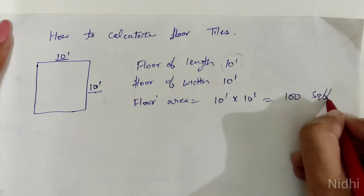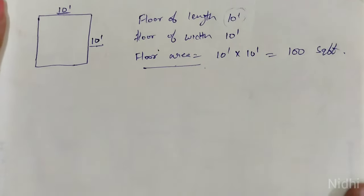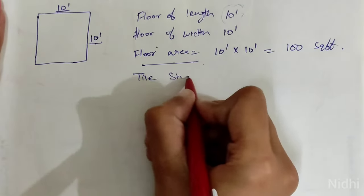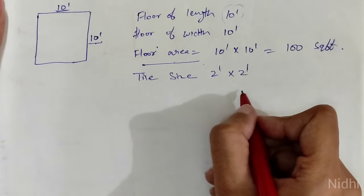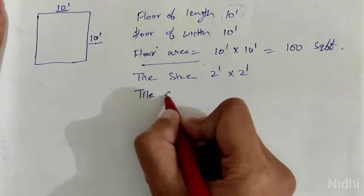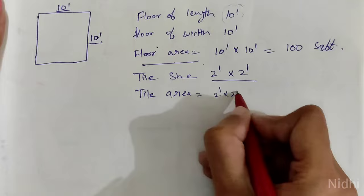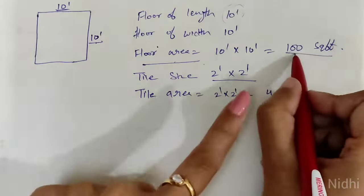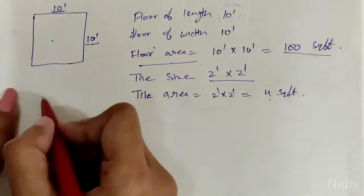Here we have a tile size that is 2 feet by 2 feet. So tile area: 2 feet by 2 feet is equal to 4 square feet. 100 square feet is the room area, 4 square feet is the tile area.